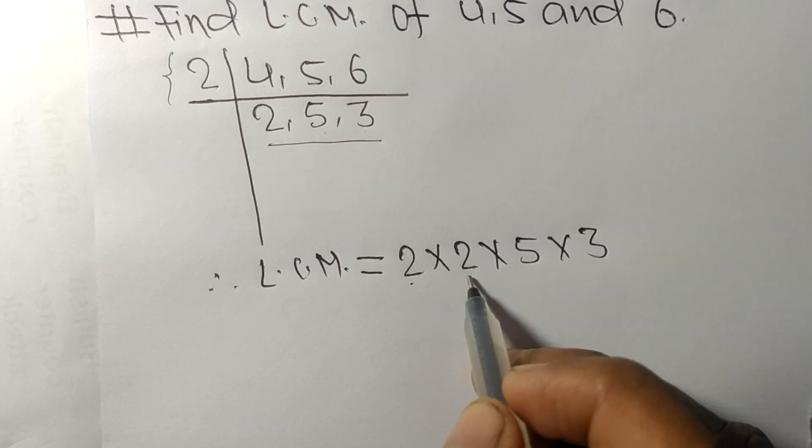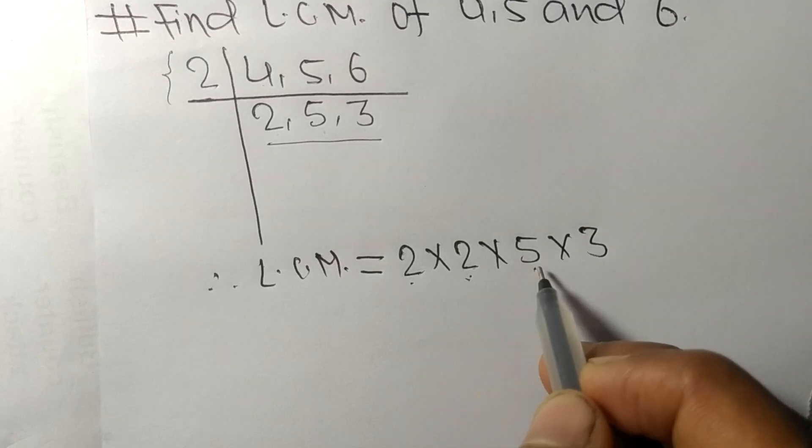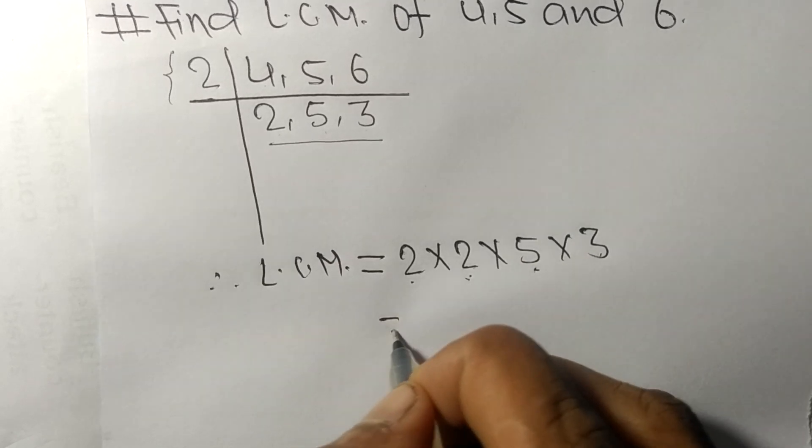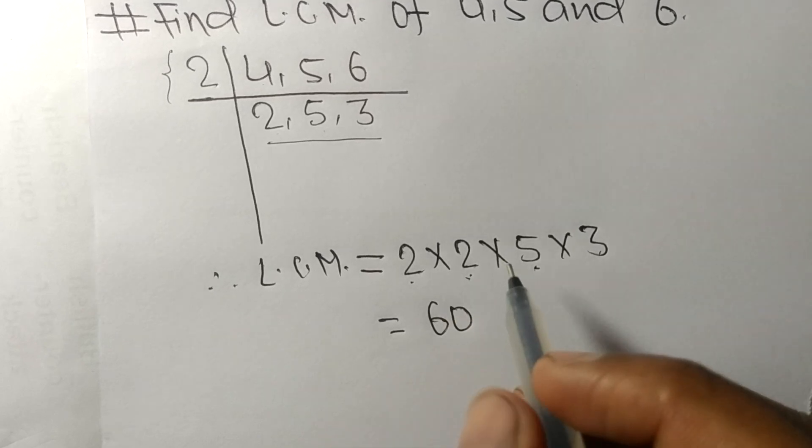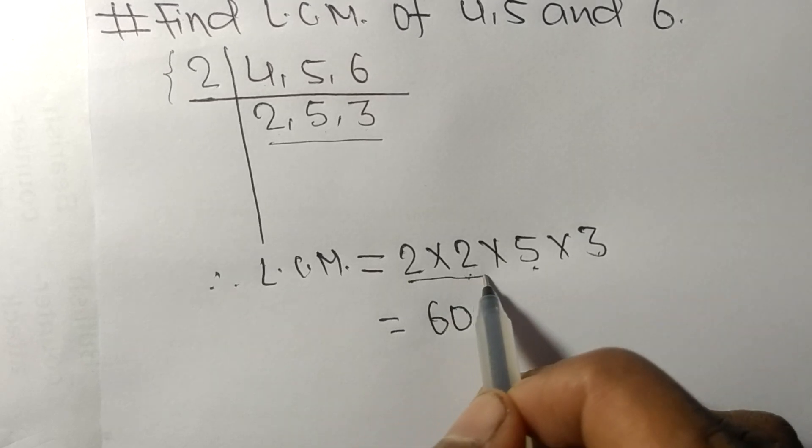times 2 means 4, 4 times 5 is 20, 20 times 3 means it is 60. So by multiplying all these...